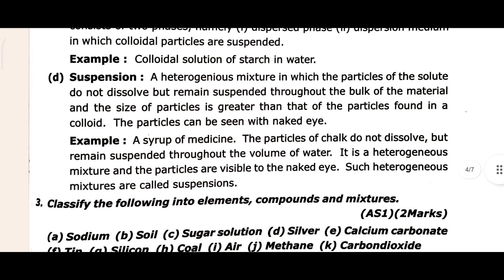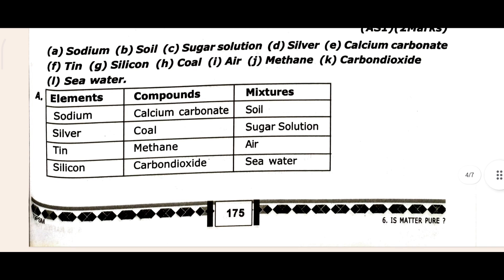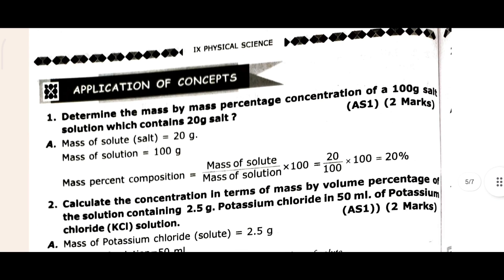I hope it is clear for you. Come to the third one: 'Classify the following into elements, compounds, and mixture.' As you can see, the answer of the third question is: Elements — sodium, silver, tin, silicon; Compounds — calcium carbonate, coal, methane, carbon dioxide. If it is clear, then come to the Application of Concept section.